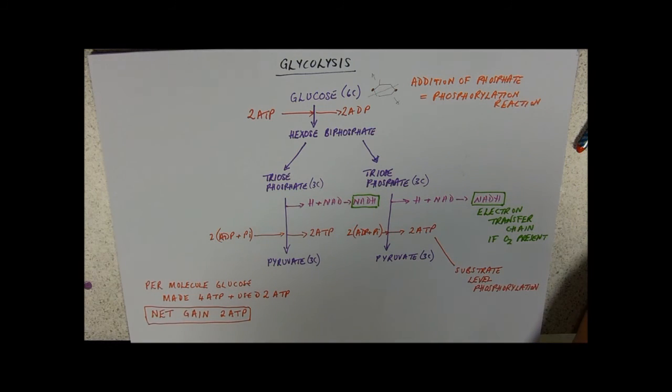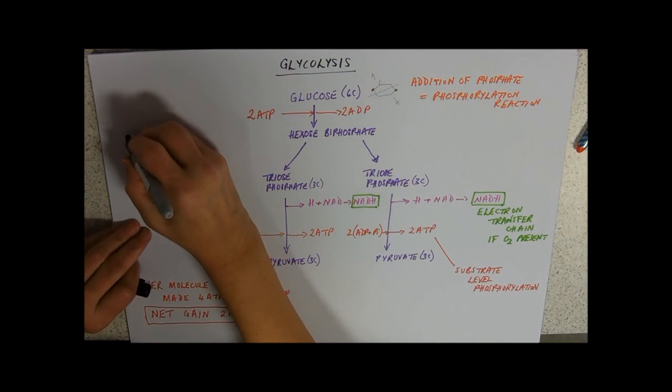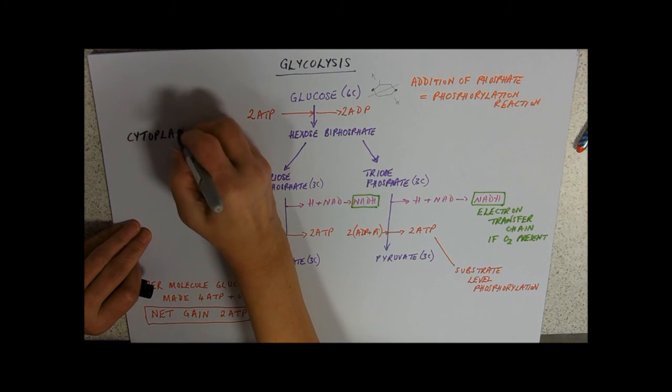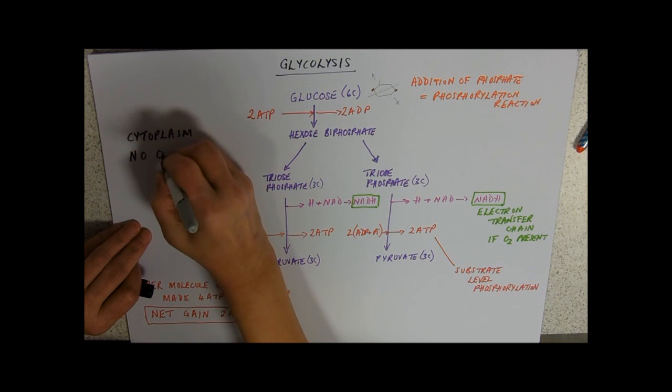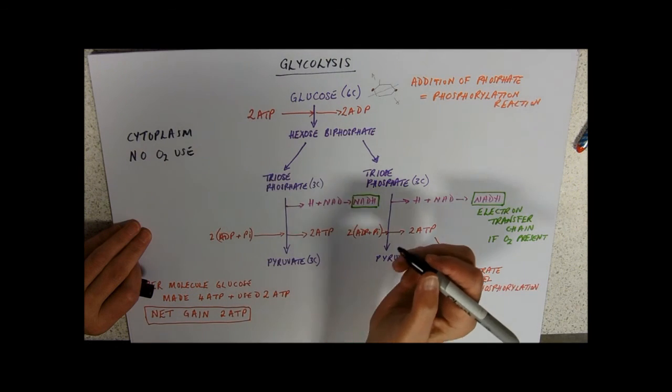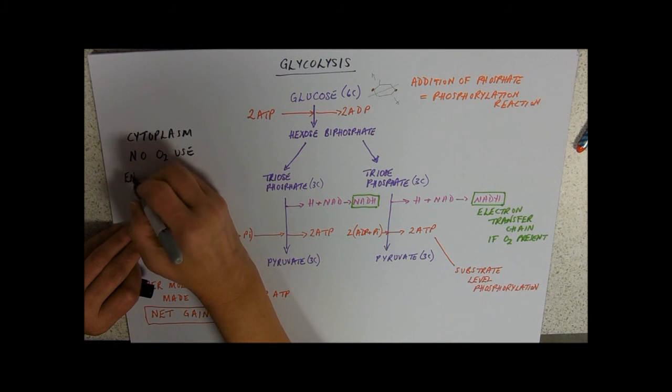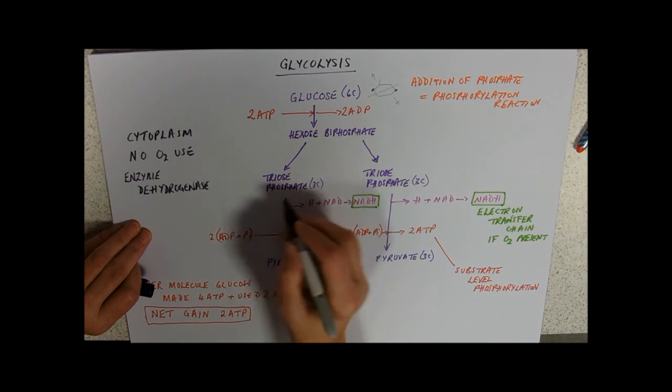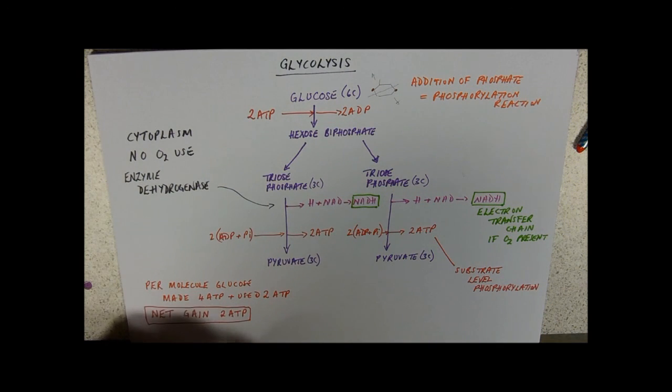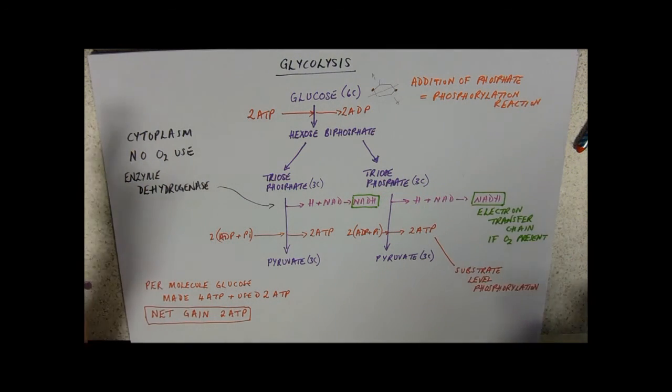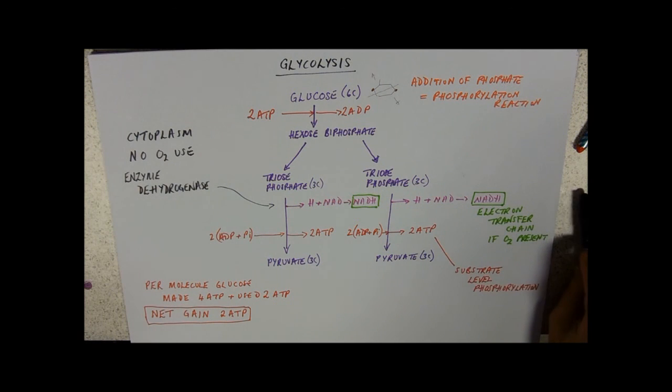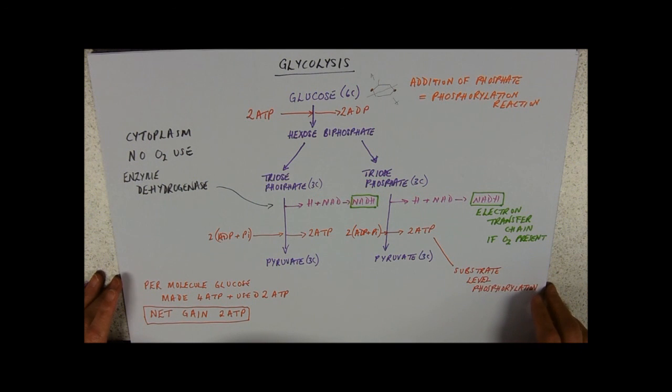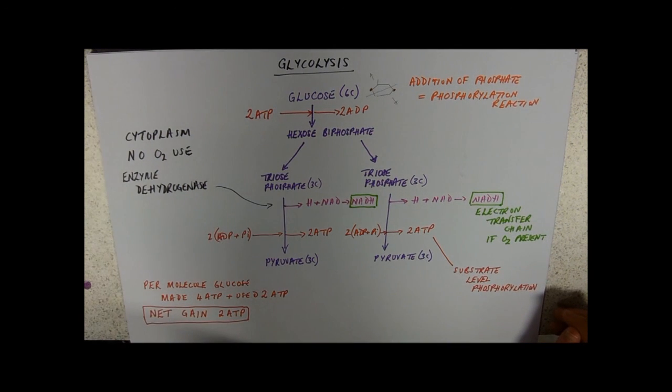So there are some other things that you need to know about glycolysis. You need to know its location—this happens in the cytoplasm. You need to know that there's no oxygen use. And you need to know the enzyme dehydrogenase. Where's that used? It's used here, it's removing the hydrogen away. And the most important bit, net gain of two ATP. So that's glycolysis all happening in the cytoplasm. In the next video, we'll move on to the mitochondrion and look at the link reaction and possibly Krebs. We'll see how the time goes.